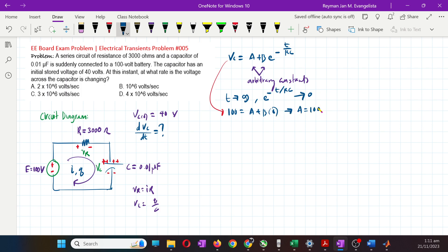So 100 equals A plus B times zero. Obviously you get A equals 100. Then we use the voltage across the capacitor at t equals 0. At t equals 0, the voltage across the capacitor is 40 volts.